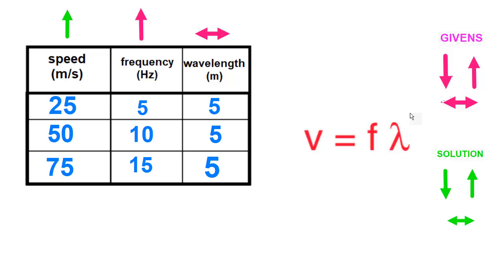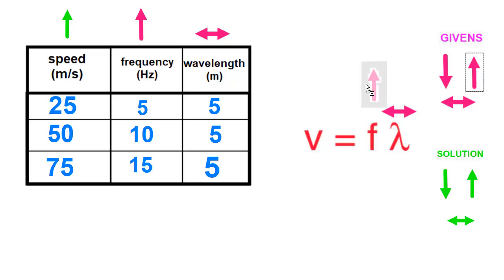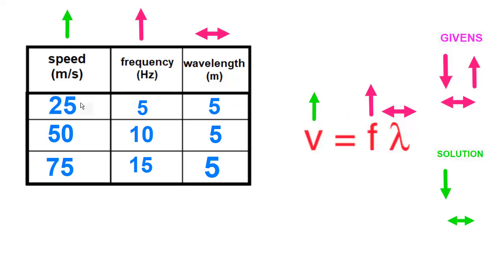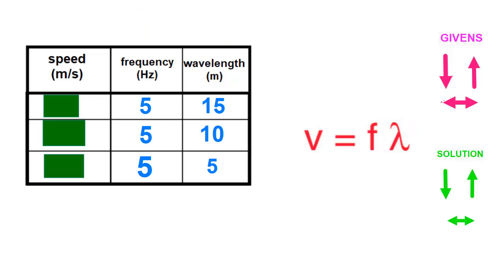In arrow math: wavelength is constant, so put the flat arrow above lambda. Frequency is increasing, so put the up arrow above frequency. On the right side of the equation, one number stays the same and the other gets bigger. Multiplying them together makes the whole right side bigger, so the left side — speed — must also get bigger. Our prediction is that speed increases, and the numbers confirm it.